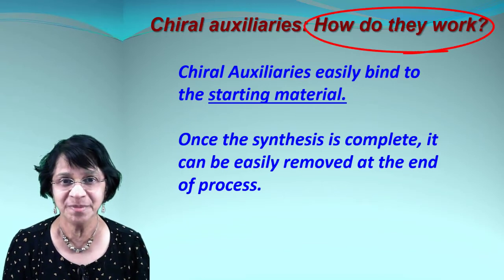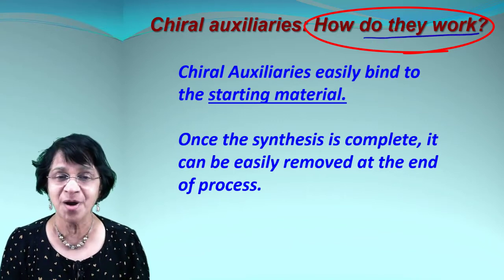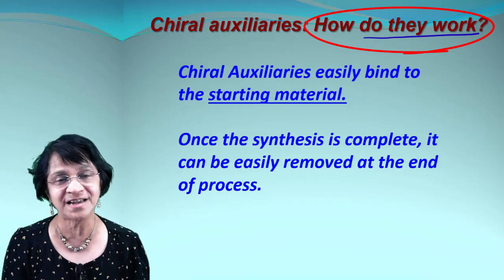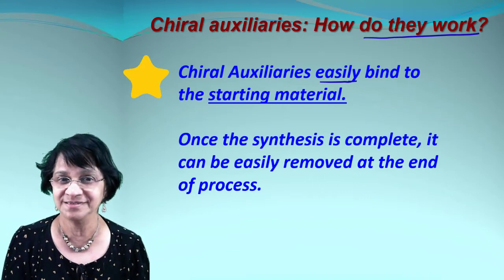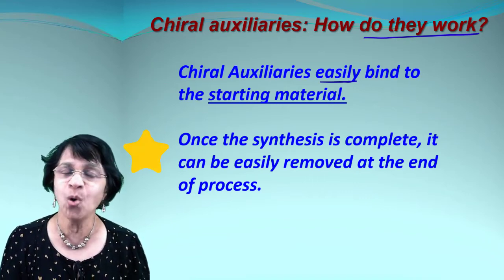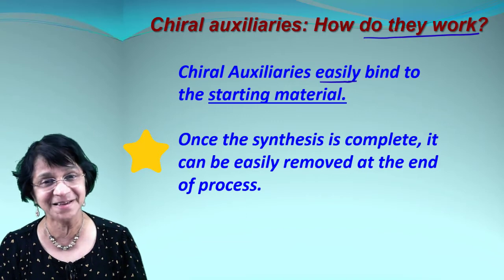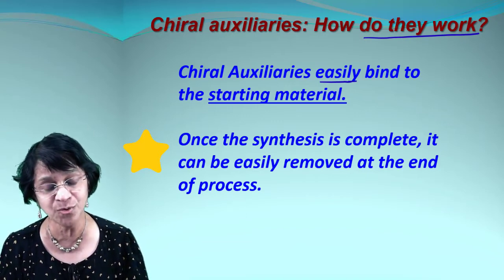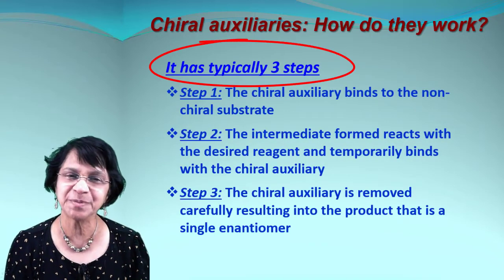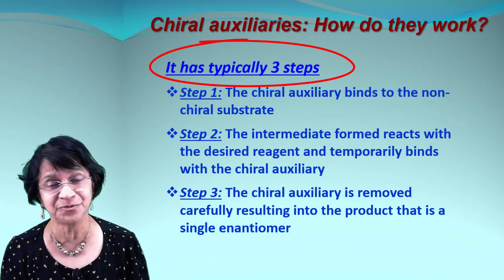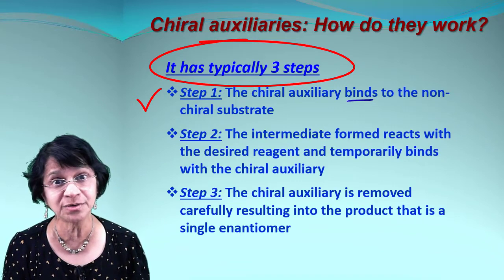Now let's find out how chiral auxiliaries actually work. One important criterion is that all chiral auxiliaries should be easily able to bind with the starting material — which we call the substrate. It goes through the synthesis, and after that the chiral auxiliary should be removed and can be recycled at the end of the process. We can classify this in three different steps.